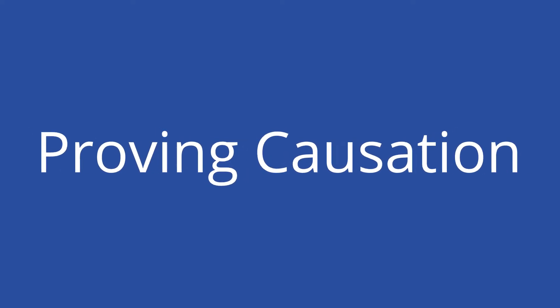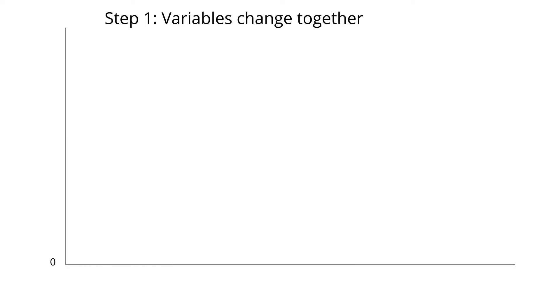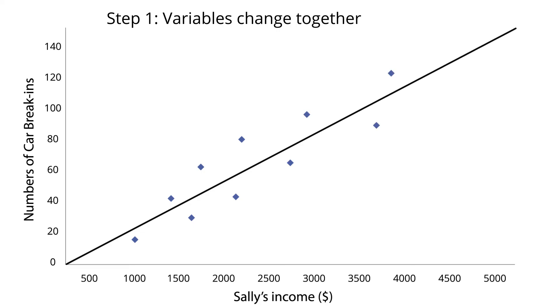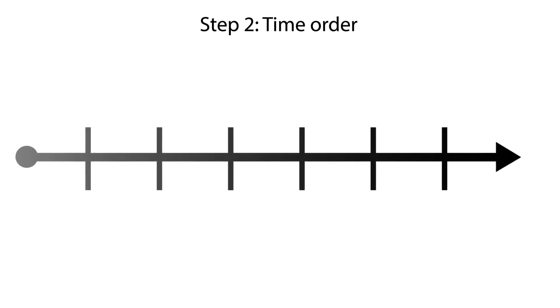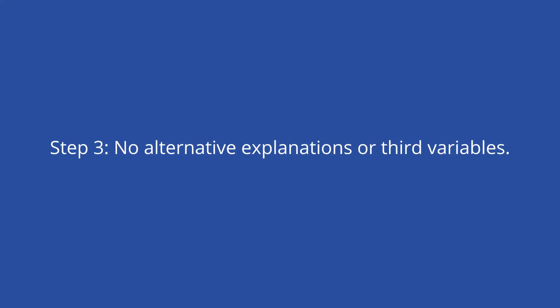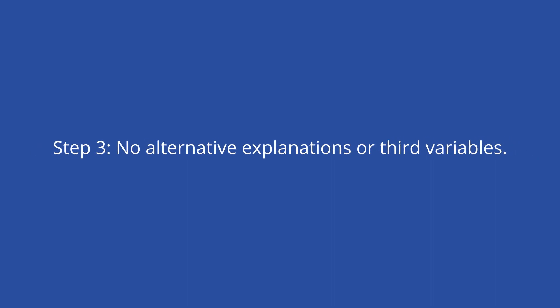Proving that one variable causes a change in another is a much more involved process. Three main conditions must be met. First, when one variable changes, the other must change in tandem — graphing a scatter plot and finding if and how the variables correlate will give you a good head start. Second, the time order must be established: one variable has to occur before a change is noticed in the second variable. In other words, the cause must come before the effect.